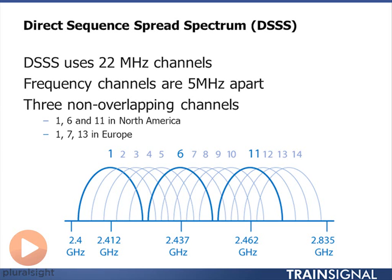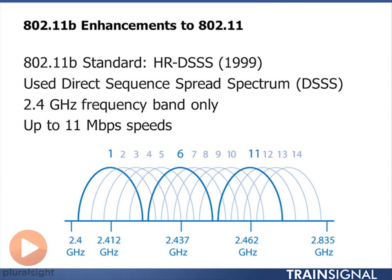Although we've focused on the US/North America, Europe, and Japan, the specifications also define a grouping called Rest of the World. Most countries conform to one of these plans. 802.11b was an enhancement to the direct sequence spread spectrum standard defined in 1997 — called the higher rate direct sequence spread spectrum — defined a couple of years later, and this is the technology that absolutely took off.